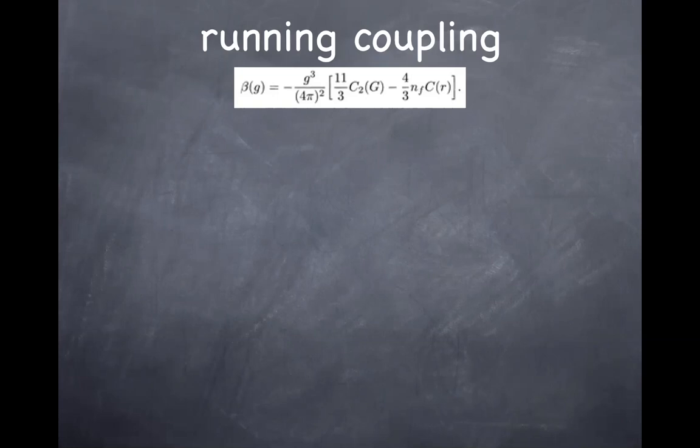One of the things we believe would happen is the idea called confinement. Suppose you have some quark or matter field coupled to the gauge field — let's assume it's heavy for the moment. If you are talking about SU(n) gauge field, this may be an n-dimensional column vector.